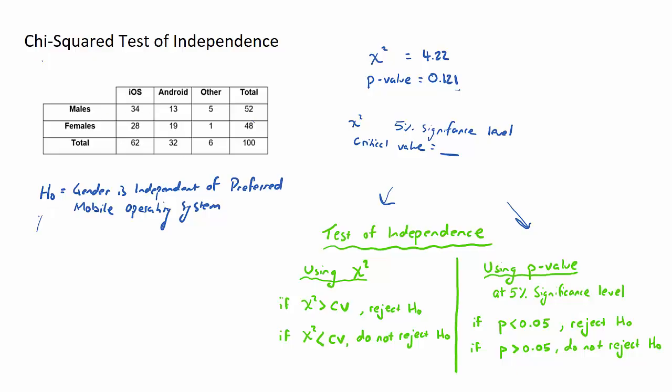Now if the critical value is provided, we can also compare that against the chi-squared value. If the critical value is provided and we found the chi-squared value, we can say well if the chi-squared value is greater than the critical value, we reject it. If the chi-squared value is less than the critical value, we do not reject it.